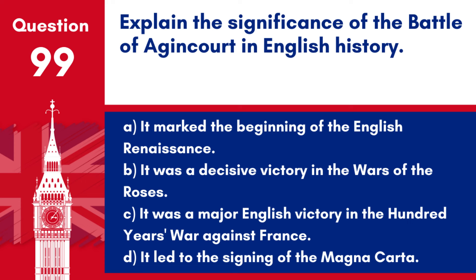Question 99. Explain the significance of the Battle of Agincourt in English history. a. It marked the beginning of the English Renaissance. b. It was a decisive victory in the Wars of the Roses. c. It was a major English victory in the Hundred Years' War against France. d. It led to the signing of the Magna Carta. Answer: c. The Battle of Agincourt in 1415 is significant in English history for being a major victory against a numerically superior French army, symbolising English martial prowess and contributing to national identity.